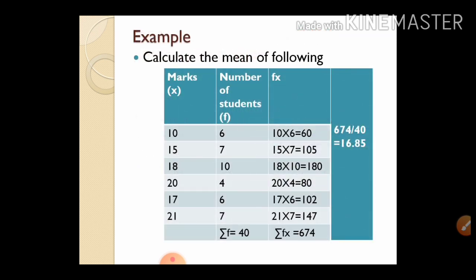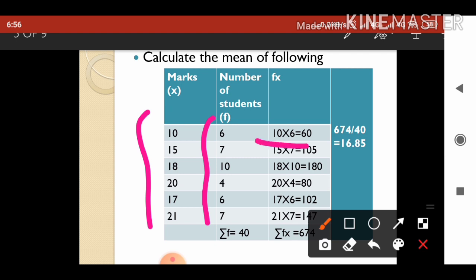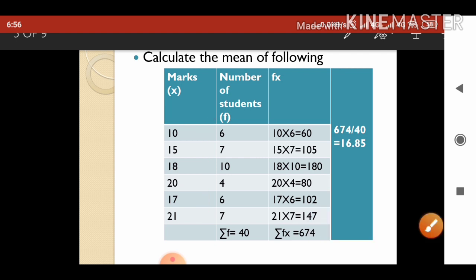See this example: calculate the mean of the following. Marks are given in the first column and frequency f is given in the second column. You get fx by multiplying f and x. In the first row, 10 into 6 equals 60. Like that we have calculated it for all the rows.